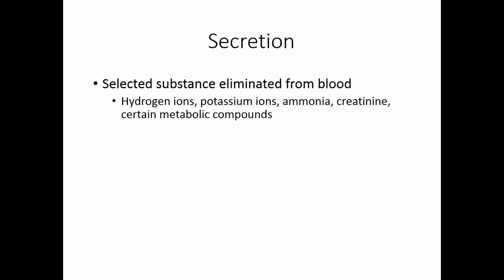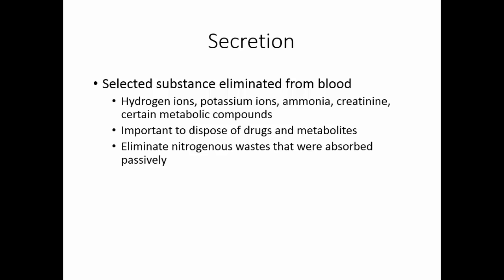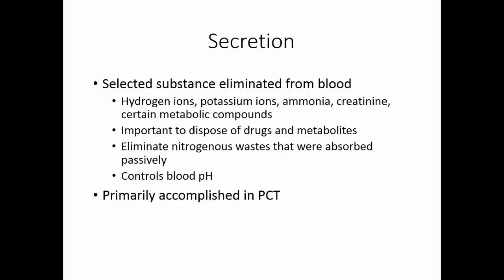The third step in urine formation is secretion. We need to eliminate some substances from the blood — hydrogen ions, potassium ions, ammonia, creatinine, and certain other metabolic compounds have to be eliminated. This secretion step is also an important way we dispose of drugs and drug metabolites. Here is where we eliminate nitrogenous wastes that were absorbed passively — the urea and the uric acid. Because we actively control the elimination of hydrogen ions from the filtrate, this is how the kidney controls blood pH. Secretion is primarily accomplished in the proximal convoluted tubule.